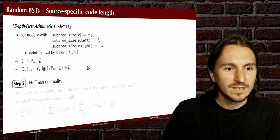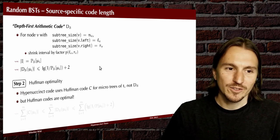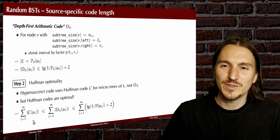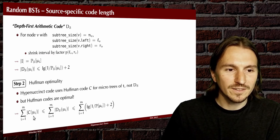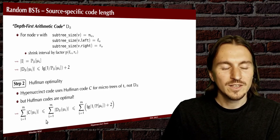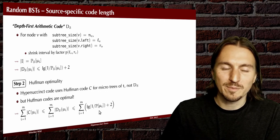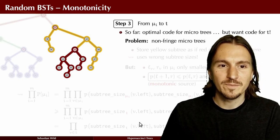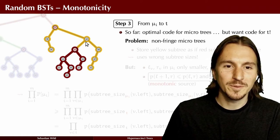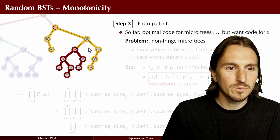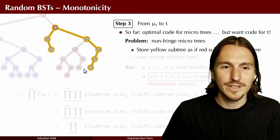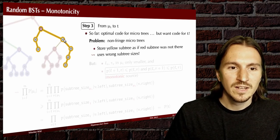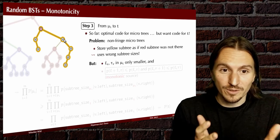The length of the final subinterval is exactly the probability of the entire micro tree, and the length of the code is hence log of one over that probability plus the additive two error from arithmetic coding. Because in the hyper succinct code we actually use a Huffman code for storing the micro tree shapes, we can't directly use this fact, but because Huffman codes are optimal prefix-free codes, the size of all codes for the micro trees in the Huffman code is no worse than the source-specific code, giving us our upper bound.